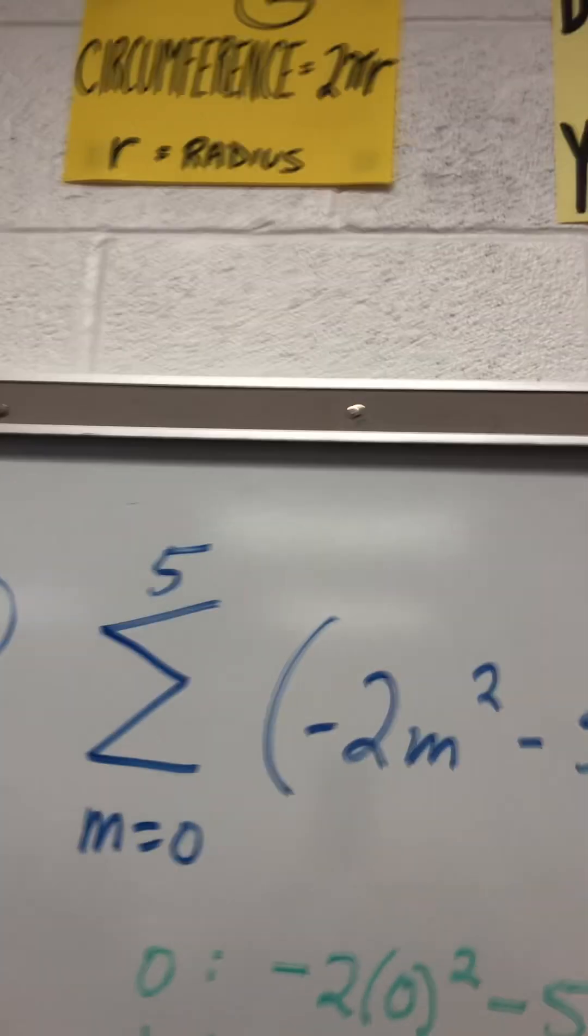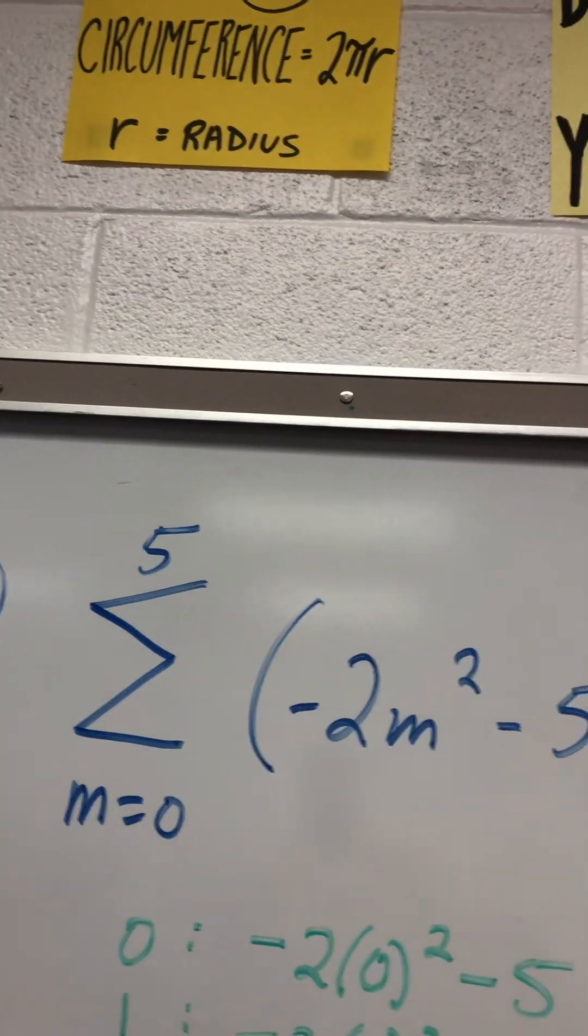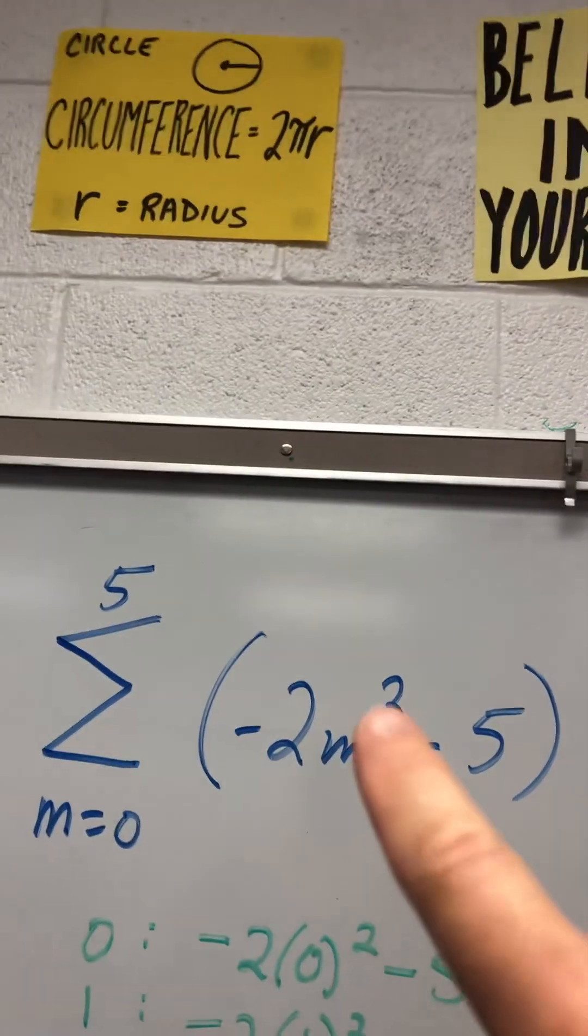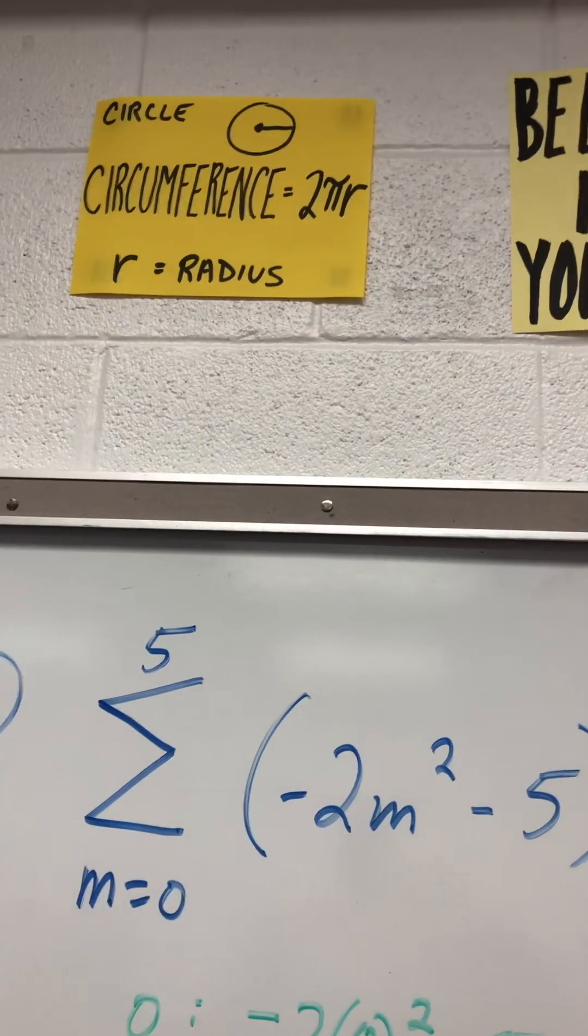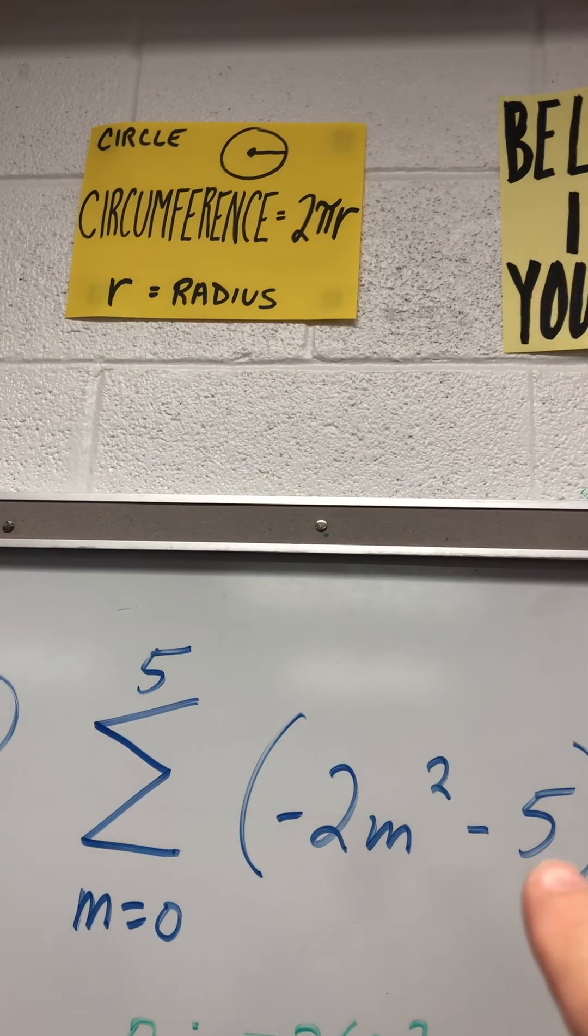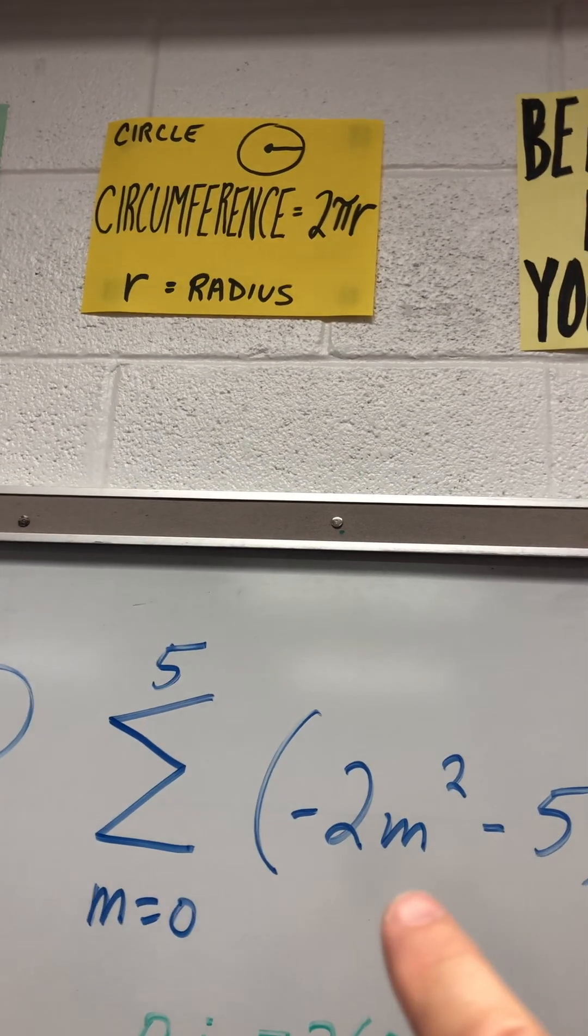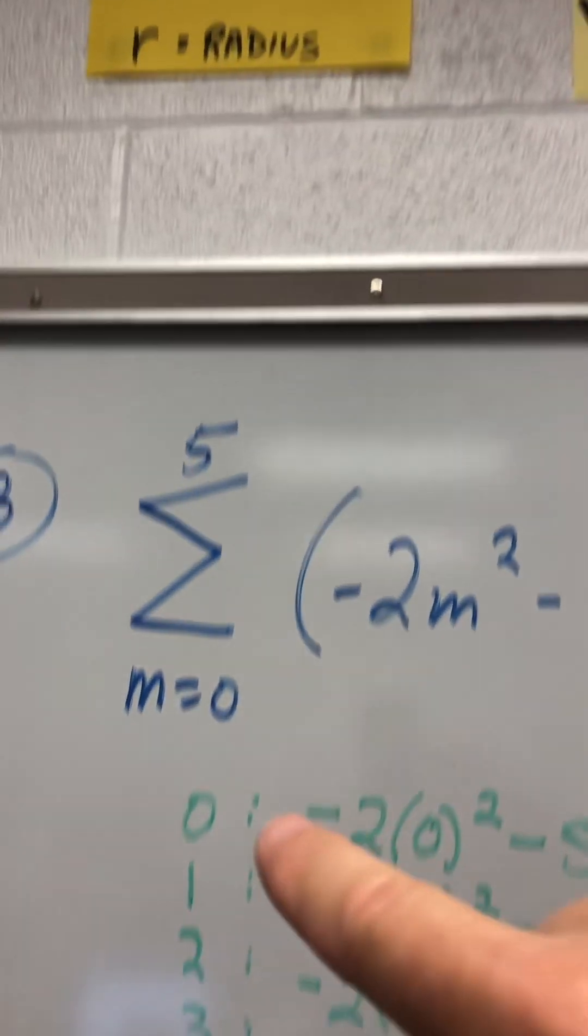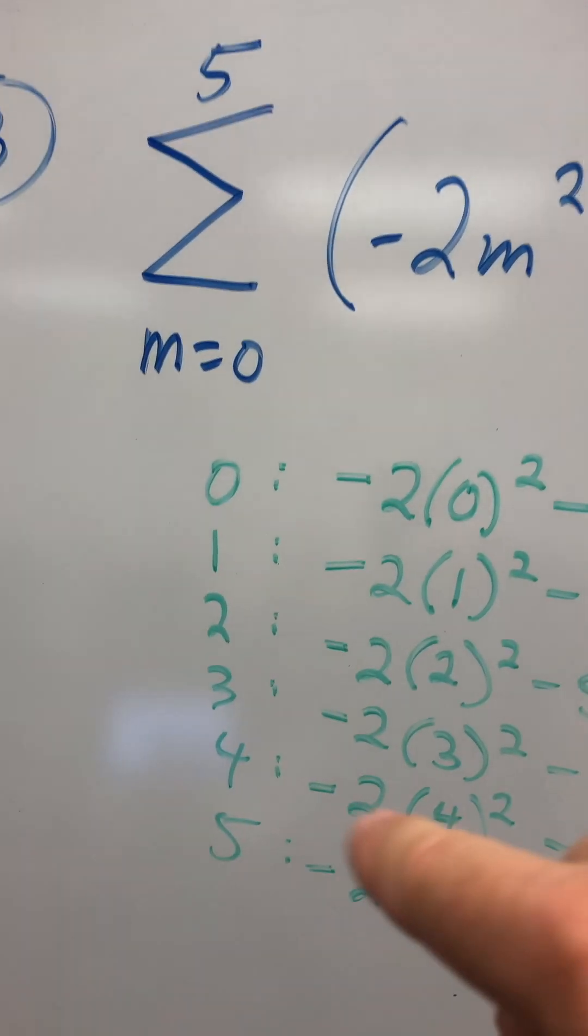Over here, we're going to go from zero to five. This time we have a squared term. Negative two M squared minus five. Instead of M, I'm going to put in zero, one, two, three, four, and five.